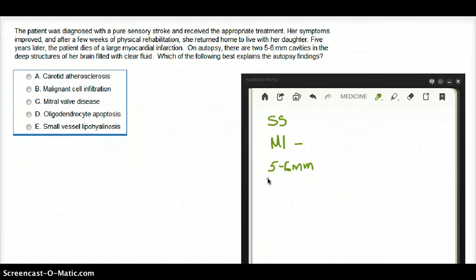So you have here, this patient is 76 by the way, you would have known if you have seen the previous video. So she is 76, she had a stroke, she was treated for the stroke, now she had an MI, she died from the MI. Because she died, an autopsy was done and two cavities were found which were filled with clear fluid, 5-6mm. Which of the following best explains the autopsy findings?